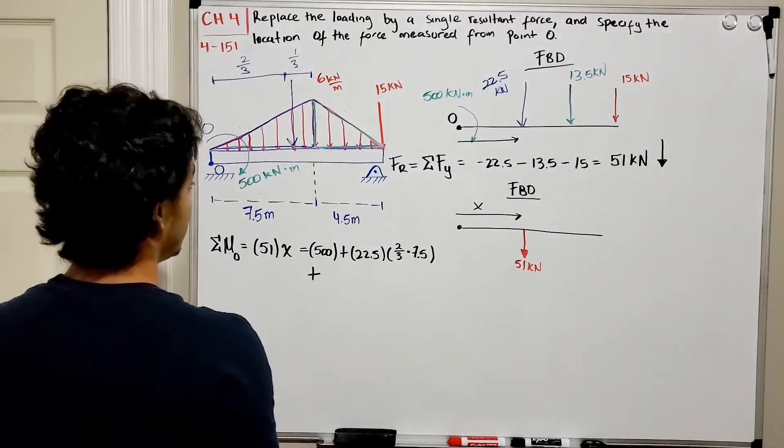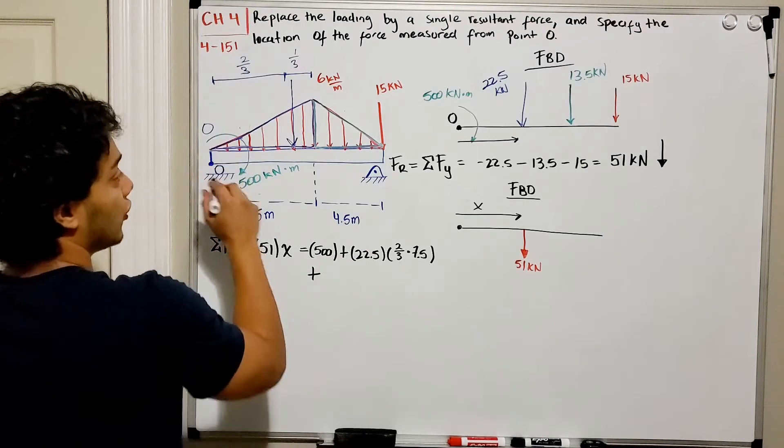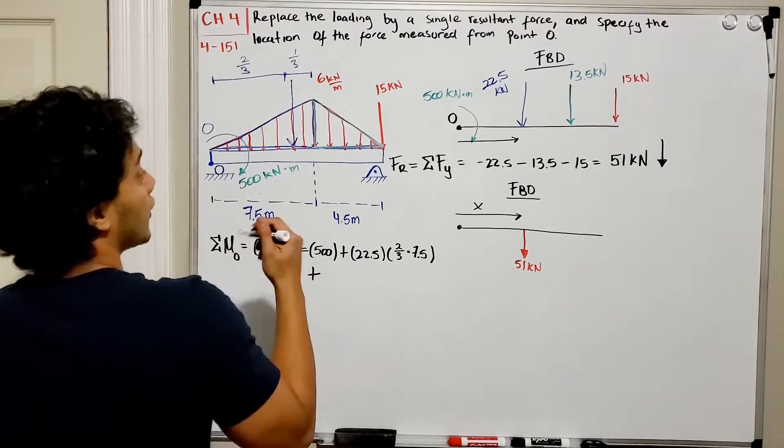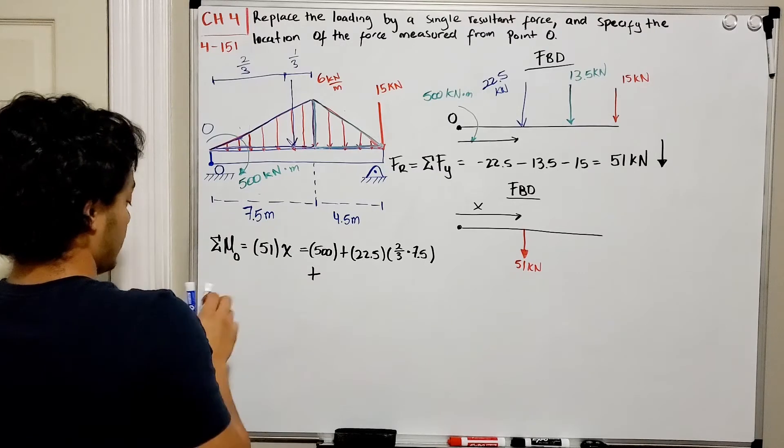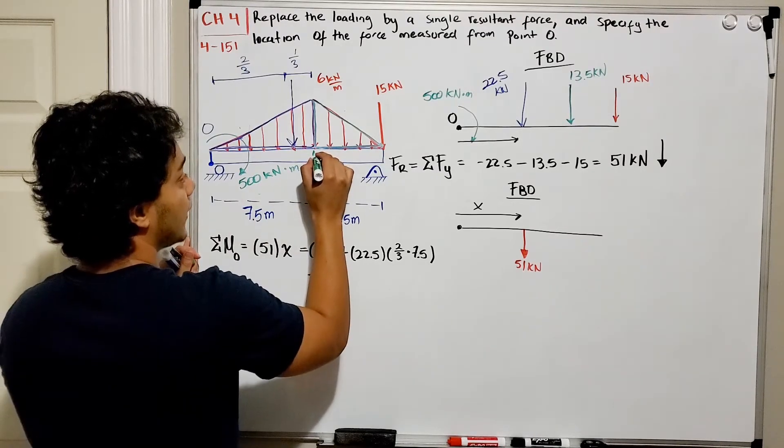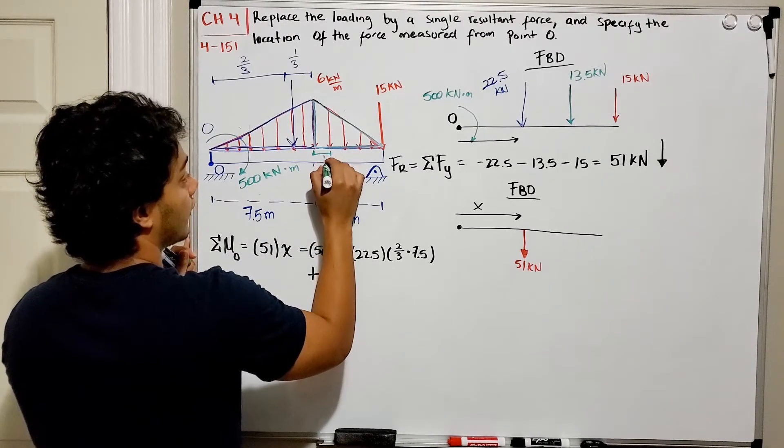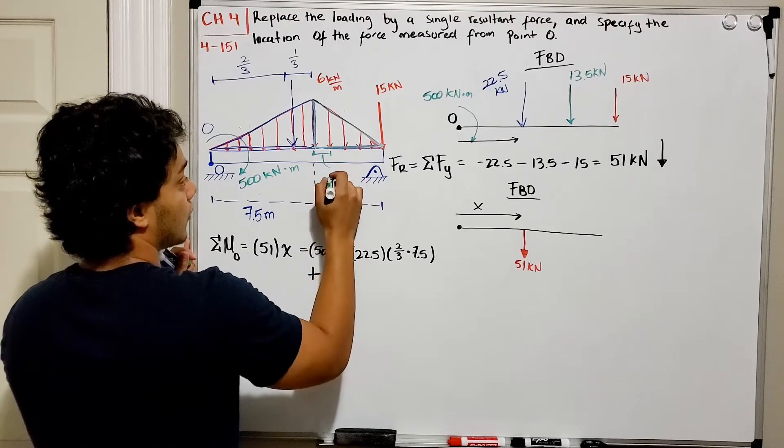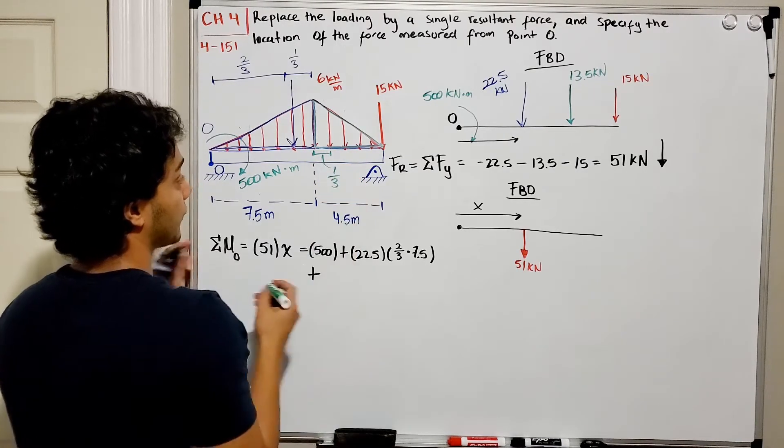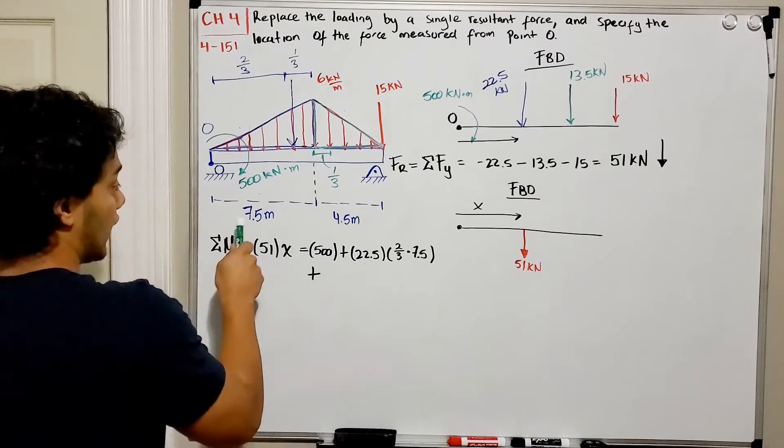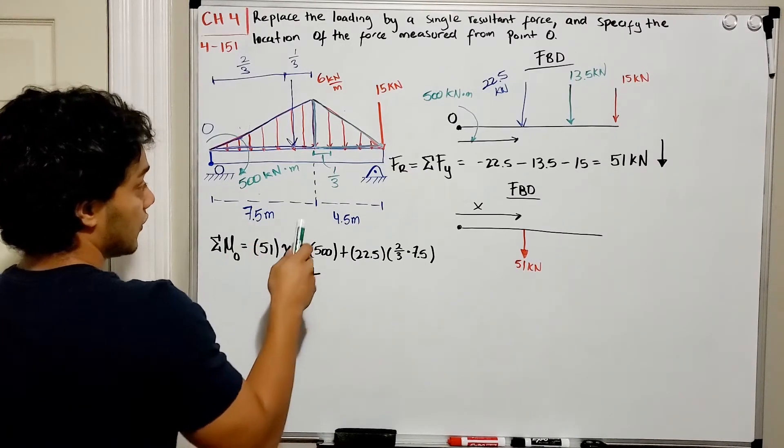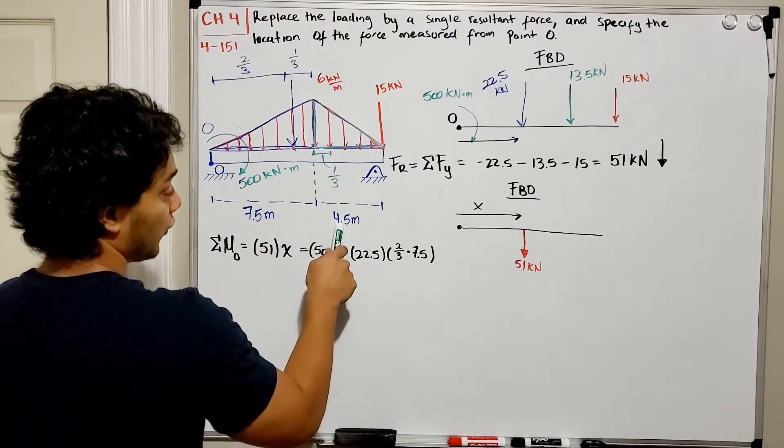Now we'll also have our green force for the green triangle. What is the distance from point O to this one? Well we know that from the big side is one-third, so it's 7.5 plus one-third of 4.5.